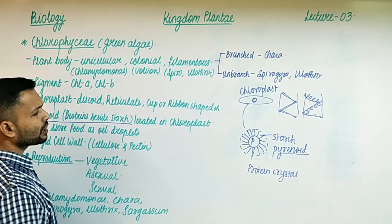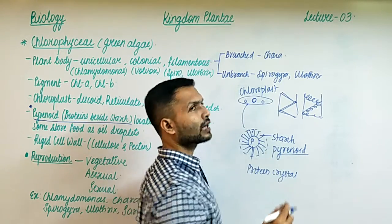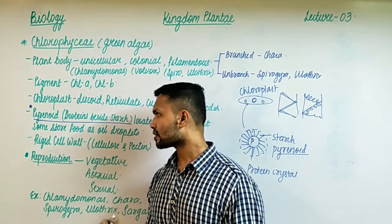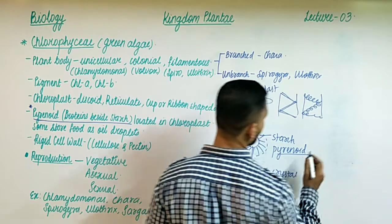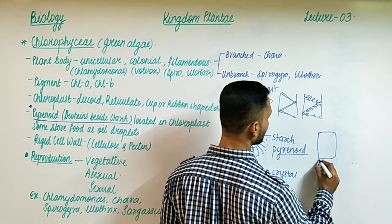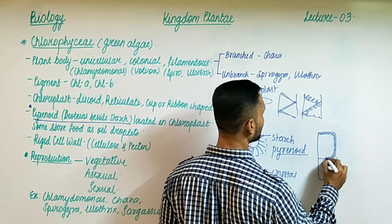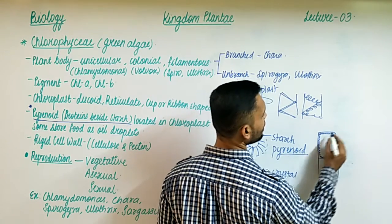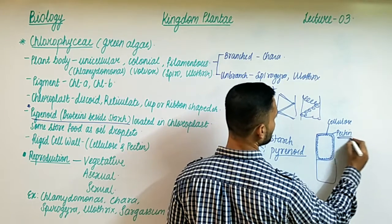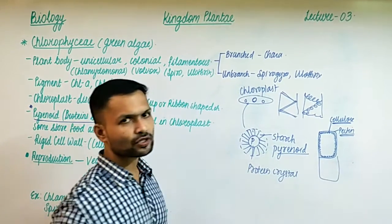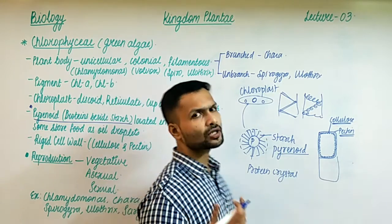Besides starch, sometimes oil droplets are also found as a storage material in some algae cells. Regarding the cell wall: the inner wall is made up of cellulose and the outer wall is made up of pectin. This cellulosic cell wall is a feature of Kingdom Plantae, and from the outside it is covered with pectin.